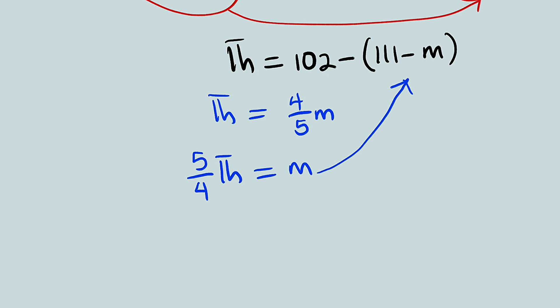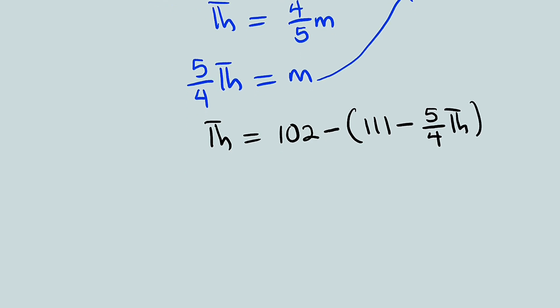So our equation now becomes TH equal to 102 minus 111 minus M, but M is 5 over 4 TH. Now let us open the bracket. TH is equal to 102 minus 111 plus 5 over 4 TH, because we are distributing this negative sign into the bracket. So all other signs will change.